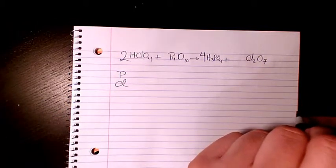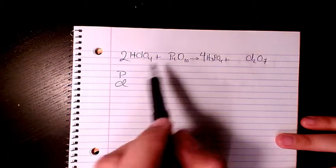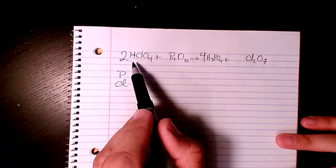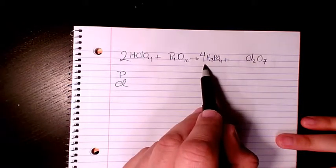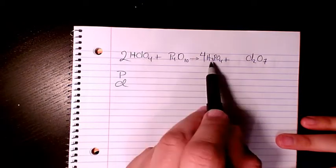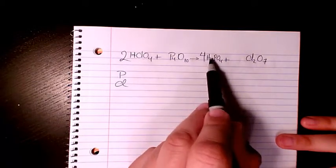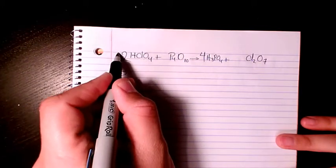And the other one is hydrogen and oxygen. Let's check the hydrogen first. Hydrogen, we have two of them here and we have 12 in here, so it's better to balance hydrogen. So we have four times three is 12, so this side has to be 12 as well.